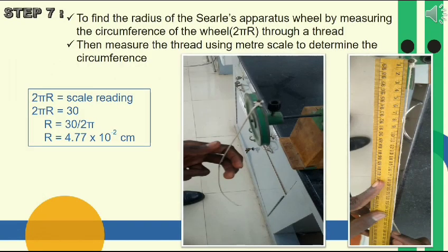To find the radius of the wheel, use a thread to measure the circumference of the wheel. From that circumference, using the formula 2πR, determine the radius of the wheel.